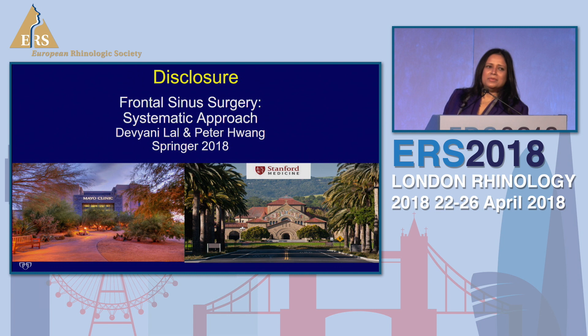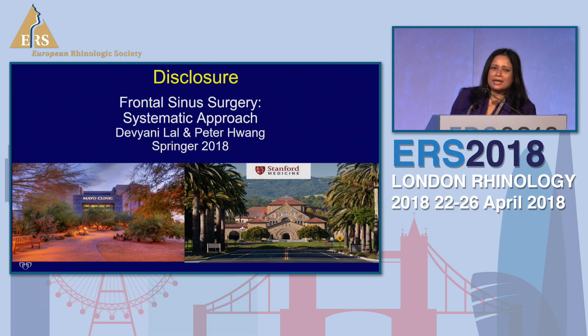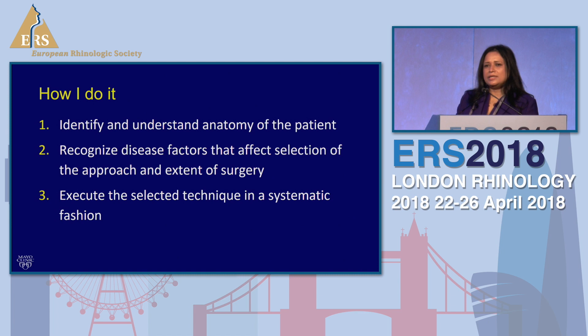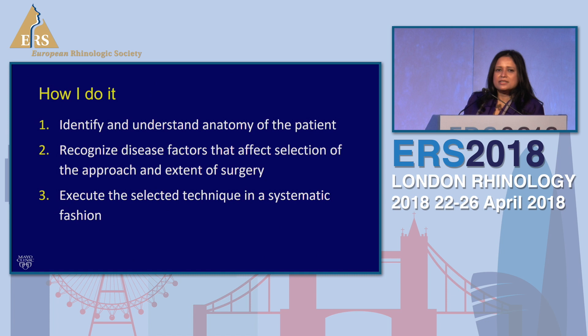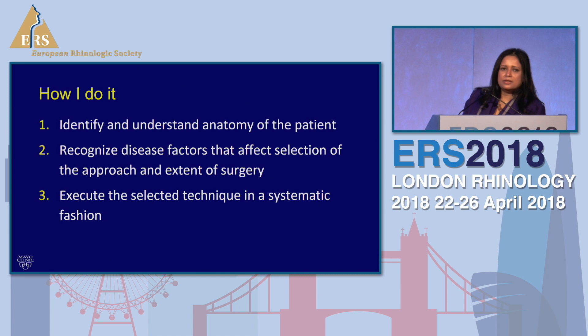A lot of the concepts I'm presenting — I have a disclosure — will be published shortly later this year in a book by Springer. My mentor Peter Huang, who I spent a year with at Stanford several years ago, and I are co-authors. We will break down the concepts into three basic fundamentals: first, identify and understand the anatomy pertinent to that patient. It's important to understand not just the anatomy but the pathology, and their location will determine what approach and procedure that patient needs. Hopefully I'll convey the importance of meticulous dissection with a systematic plan.